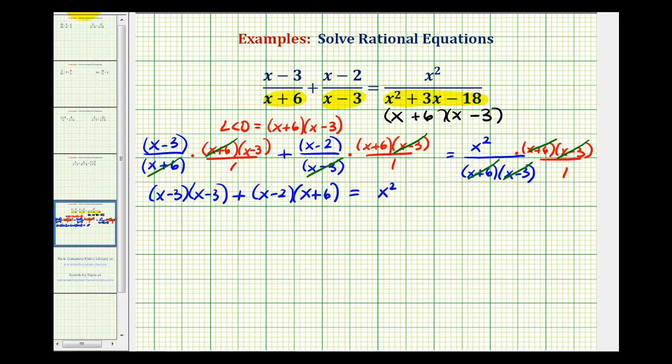Now we'll clear the parentheses. So we'll have x squared minus three x minus three x, that's minus six x plus nine plus x squared plus six x minus two x, that's plus four x minus 12 equals x squared.